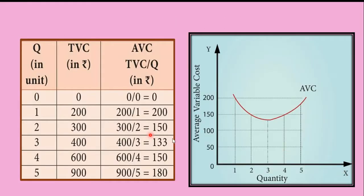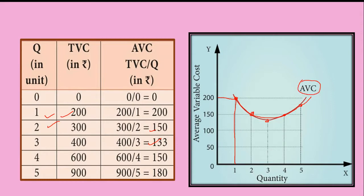Using this table we can plot the graph with quantity on the x-axis and average variable cost on the y-axis. When output is 1, AVC is 200; when output is 2, AVC is 150; when output is 3, it is 133; when output is 4, it is 150; and when output is 5, it is 180. Joining all these points gives a U-shaped curve called the average variable cost curve.